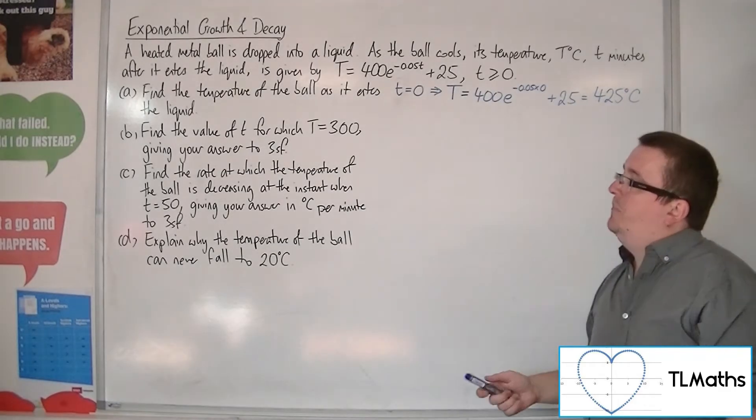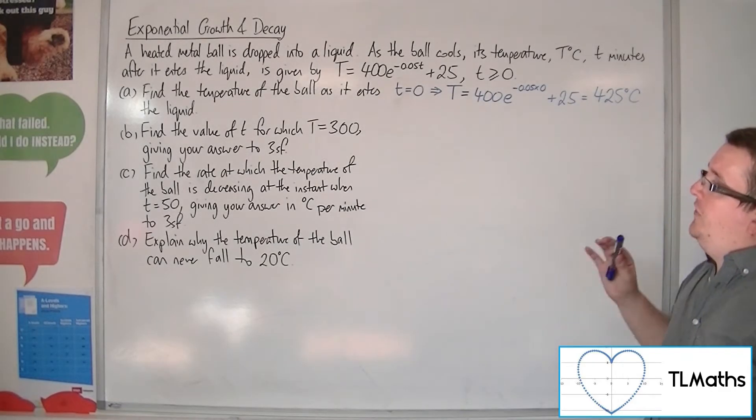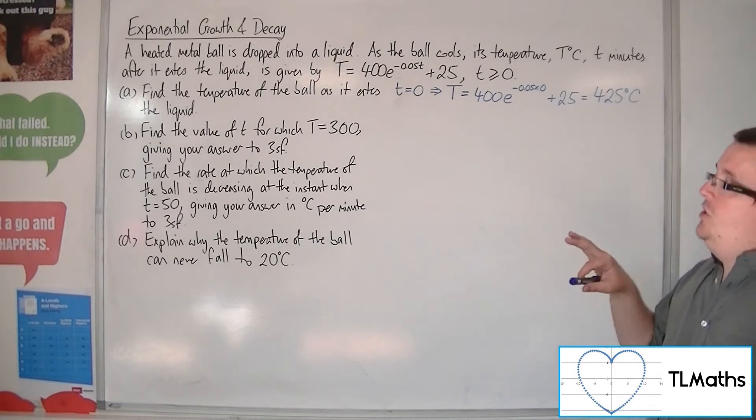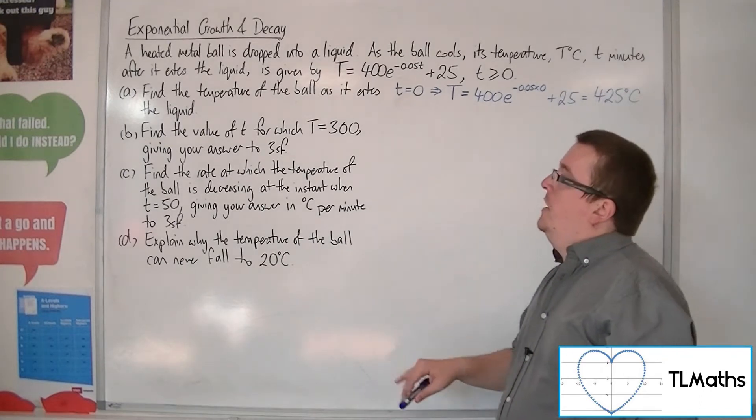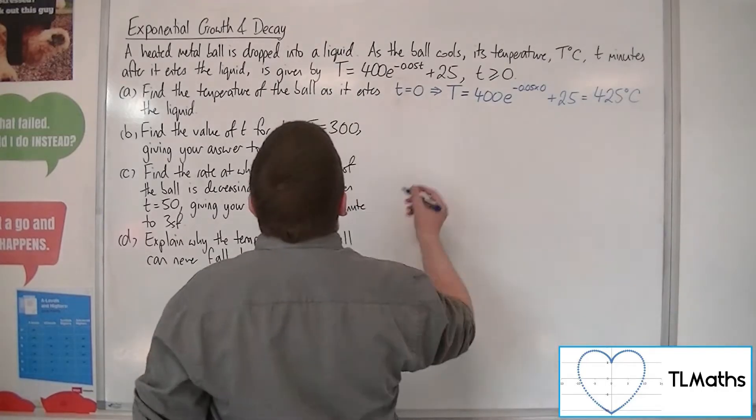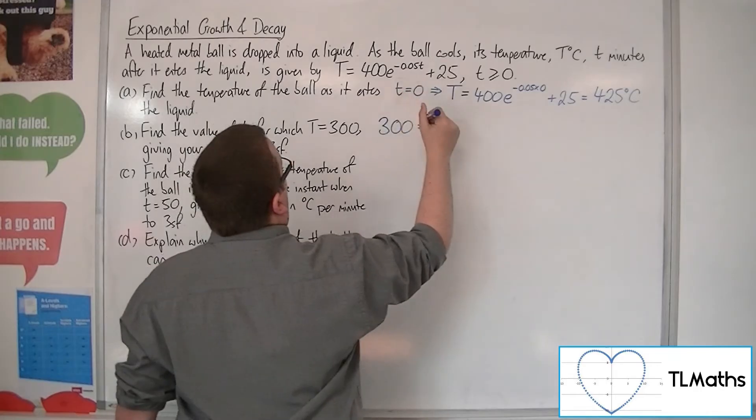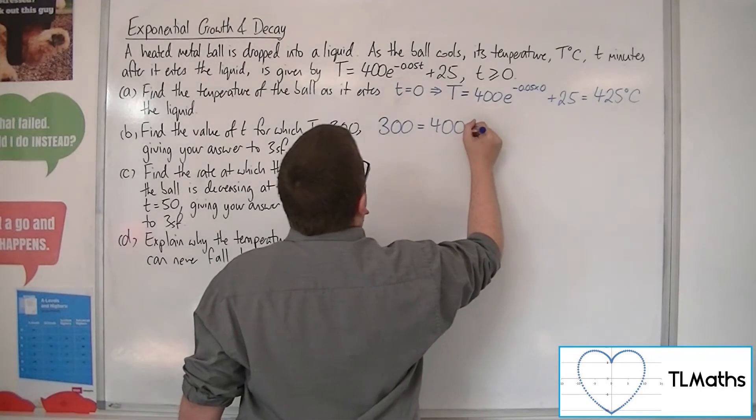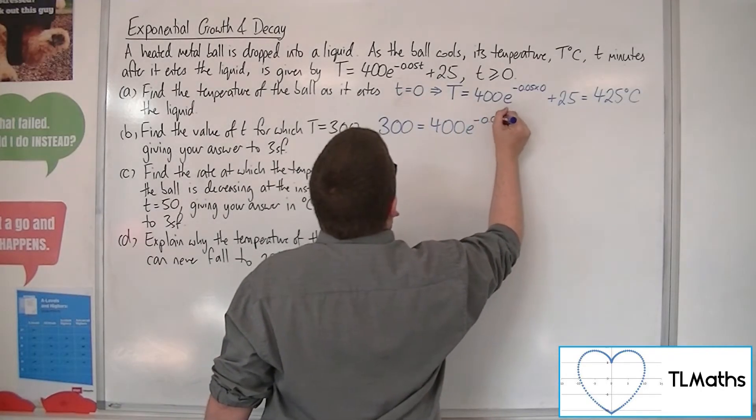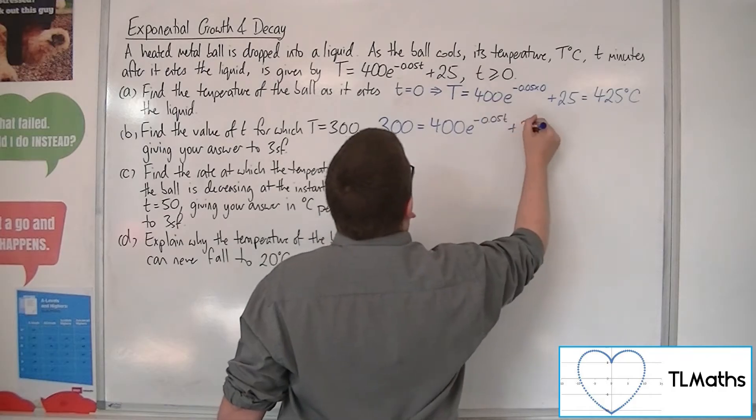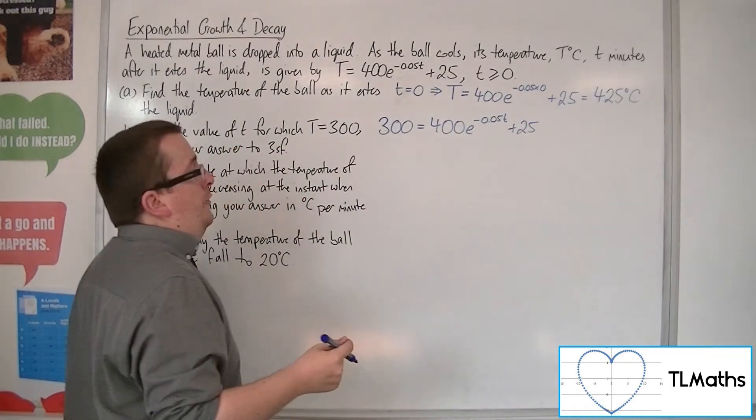Part B. Find the value of T, the time, for which the temperature T is 300, giving your answer to 3 sig fig. So, the temperature is 300, and we put it equal to the 400E to the minus 0.05T plus 25. So first of all, subtract the 25 from both sides.